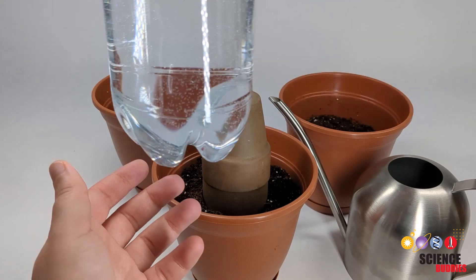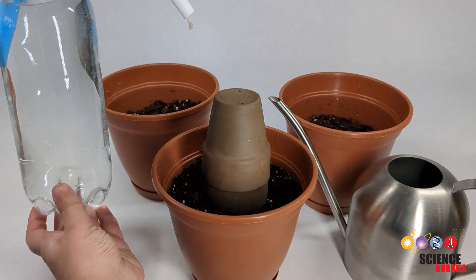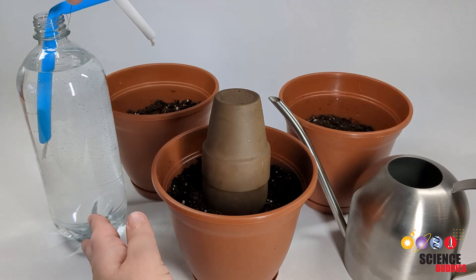Lastly, you'll add your drip irrigation system over the center of the container and it will dispense the water throughout the week.